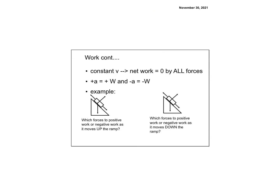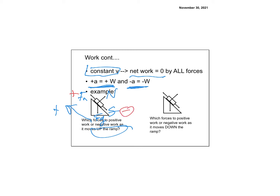If there is a constant velocity, the net work is zero. If there's a positive acceleration, pay attention — the work is not zero. On an incline, we have Fg and N. If the object is moving up the ramp, we have an applied force Fa pushing it up and friction pulling it down. Because it's moving up, Fa is doing positive work and friction is doing negative work. Fg does negative work — but only the component in the direction of motion counts. N does zero work.